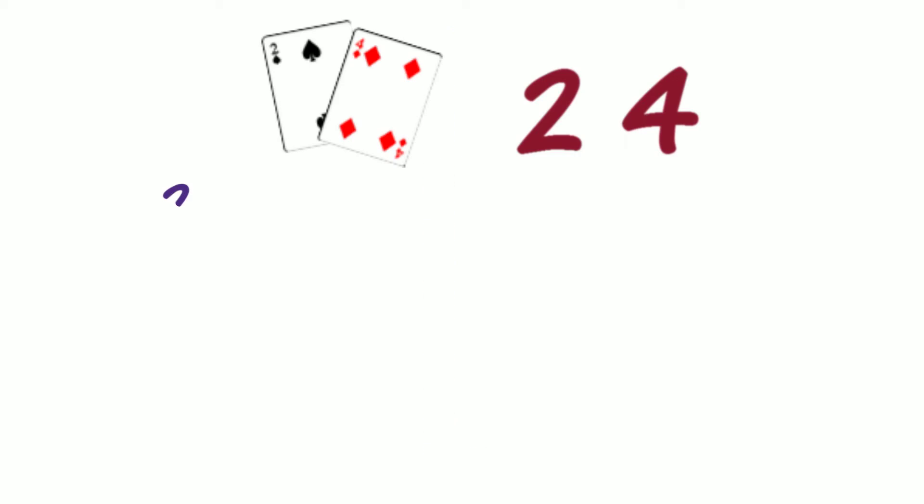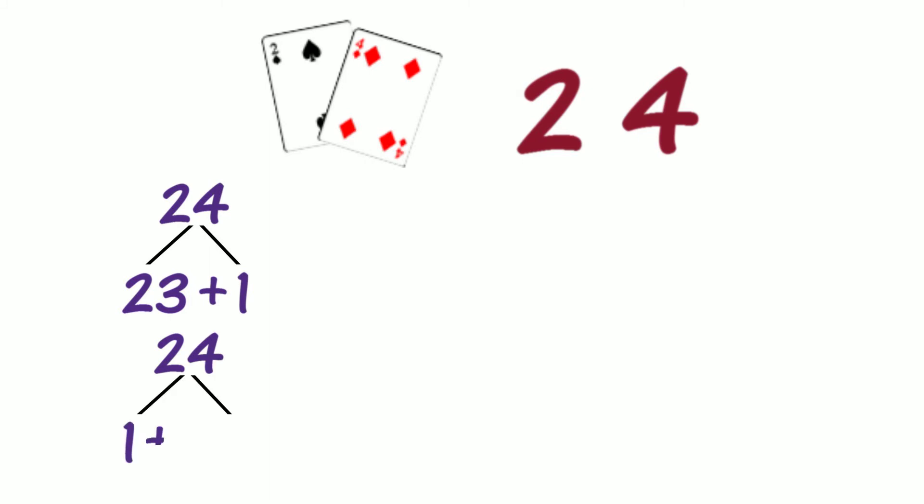Let's select cards to make a two-digit number. Is this number 24? Let's make a tower of 24 blocks. How could we partition this tower of 24 blocks into two parts? Could we partition 24 into 23 and 1? Let's record our partition. If we know that we can partition 24 into 23 and 1, do we also know that we can partition 24 into 1 and 23?